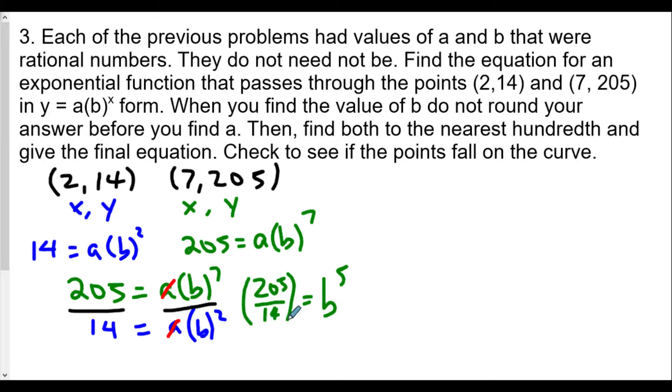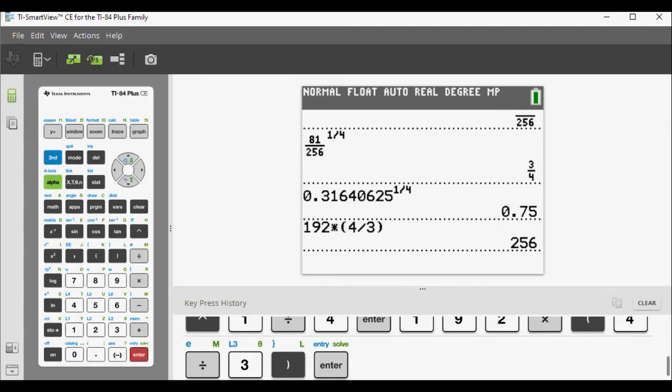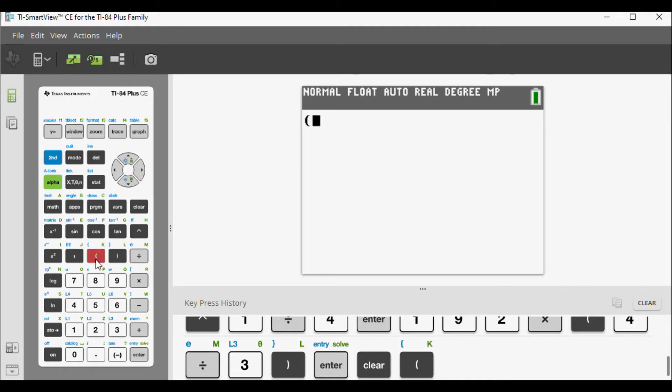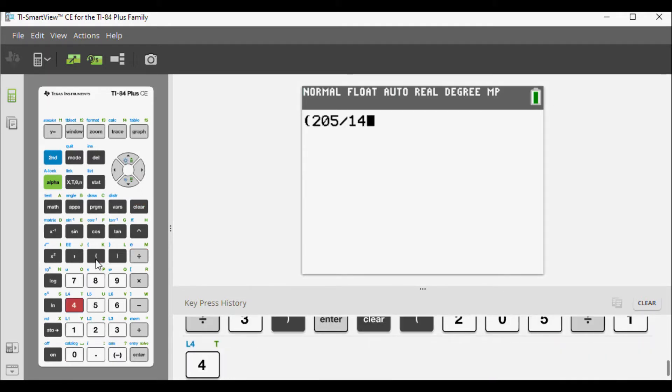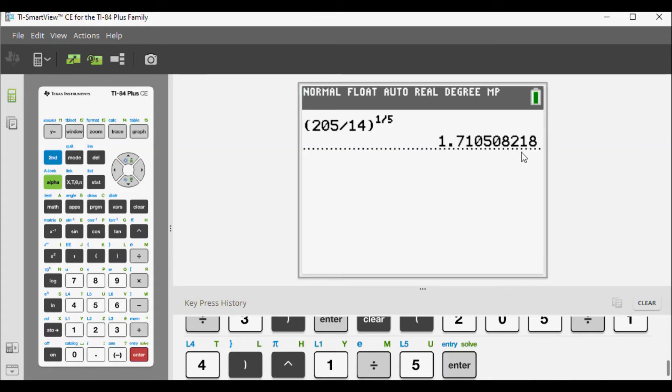I'm going to leave it this way, and we're going to use our technique of raising both sides to the reciprocal of the exponent for b. The reciprocal of five is one-fifth. So let's get to our calculator here. We take parenthesis 205 divided by 14, close that parenthesis, and we're going to raise that to the one-fifth power. We're going to get a numerical value of 1.710508218, and it will continue onwards because this is probably an irrational number, meaning it cannot be written as a ratio of two integers.